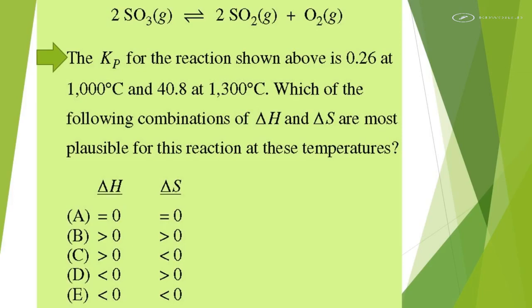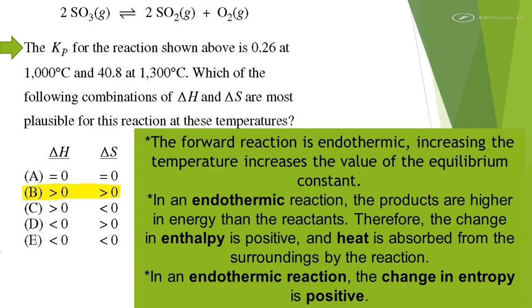The Kp for the reaction shown above is 0.26 at 1,000 degrees Celsius and 40.8 at 1,300 degrees Celsius. Which of the following combinations of delta H and delta S are most plausible for this reaction at these temperatures? The forward reaction is endothermic, increasing the temperature increases the value of the equilibrium constant.